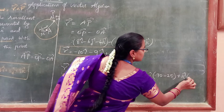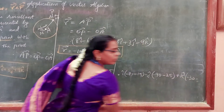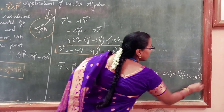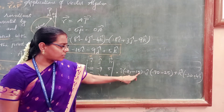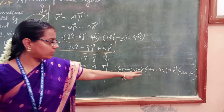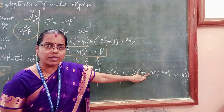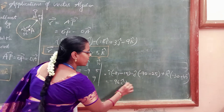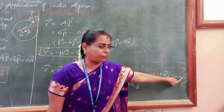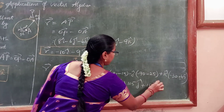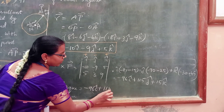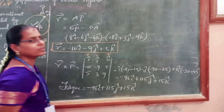Expanding the determinant: for i, we get minus 81 minus 15, which is minus 96i. For j, we get minus 90 minus 25, which is minus 115, but with the sign change it becomes plus 115j cap. For k, we get minus 30 plus 45, which is 15k cap. So the torque is minus 96i cap plus 115j cap plus 15k cap.